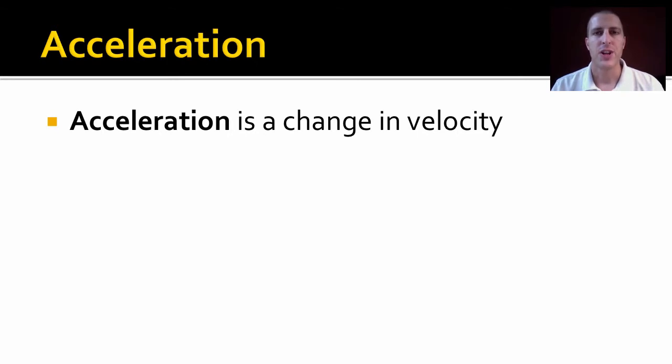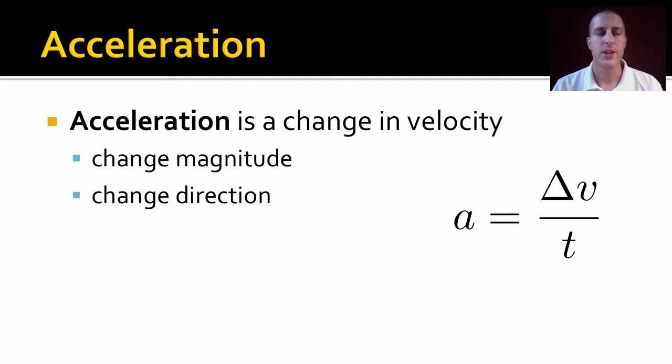Acceleration has to do with a change in velocity. And here's an equation for acceleration. A equals delta V over T. Now, when we're talking about a change in velocity, remember, velocity is a vector, so we could change two things. We could change the magnitude of the velocity, the speed, or we could change the direction. And either one of those we change would give us acceleration. So, we could keep going the same speed and change direction, such as going around in a circle at a constant speed, and we would still be accelerating.